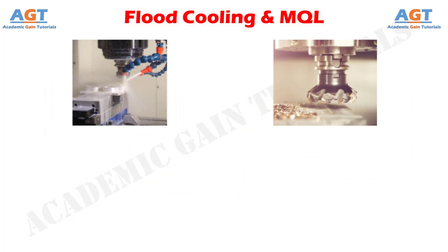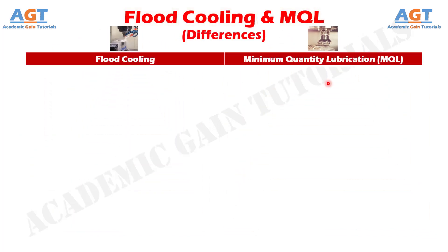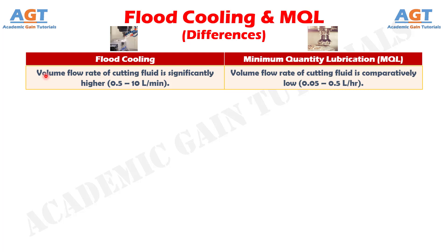Let's look into the basic differences between flood cooling and minimum quantity lubrication in a tabular form. Difference number one: in flood cooling, the volume flow rate of cutting fluid is significantly higher, about 0.5 to 10 liters per minute, whereas in minimum quantity lubrication, the volume flow rate of cutting fluid is comparatively low, about 0.05 to 0.5 liters per hour.